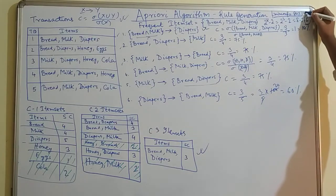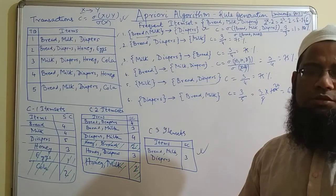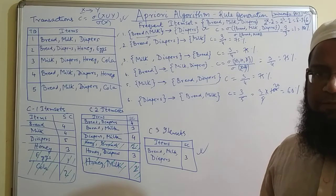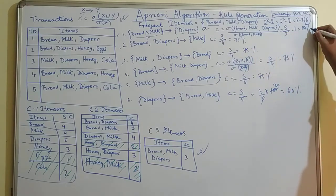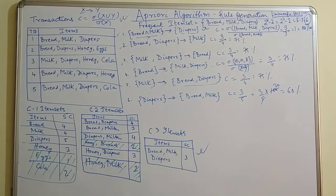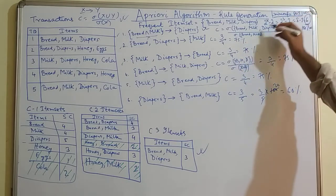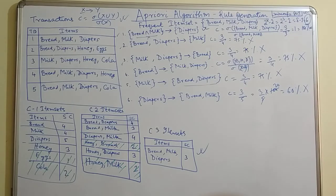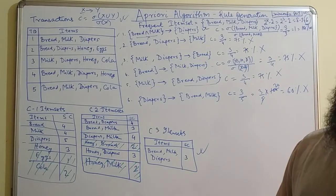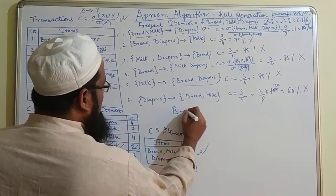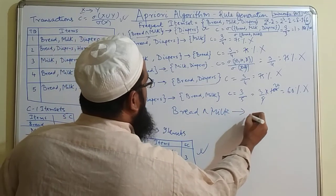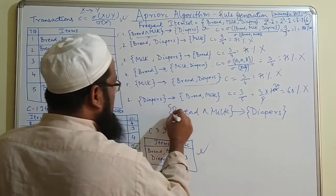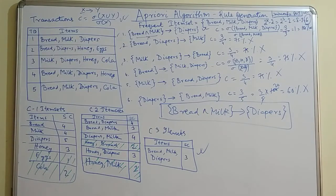The minimum confidence given in the problem is 80 percent. We now check which rules are strong rules and which to avoid. The first rule has 100 percent confidence — that is more than 80 percent, so we take it. The second rule has 75 percent, which is less than 80 percent — we cannot take it. Similarly, rules three, four, and five each have 75 percent, and rule six has 60 percent — none of these are accepted. So the only strong association rule we get is: bread and milk implies diapers.